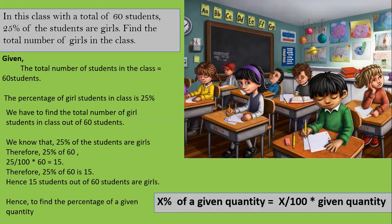So the formula is: x percent of a given quantity equals x by 100 into the given quantity. Here x is 25 and the given quantity is 60, so 25 by 100 into 60 equals 15. You can either think logically or use the formula, but logical thinking is recommended especially during exams. Out of 60 students, 25 percent are girls, so 25 of 60 gives us 15 girls.